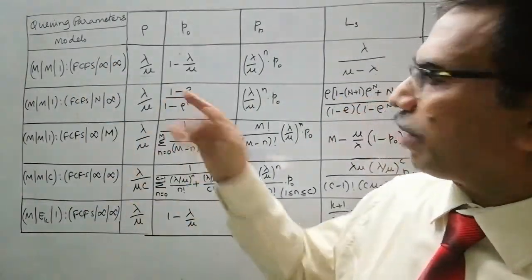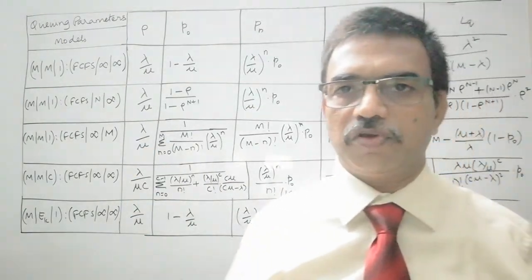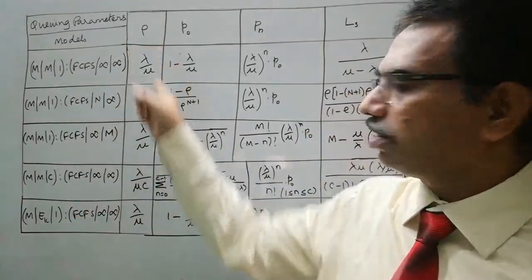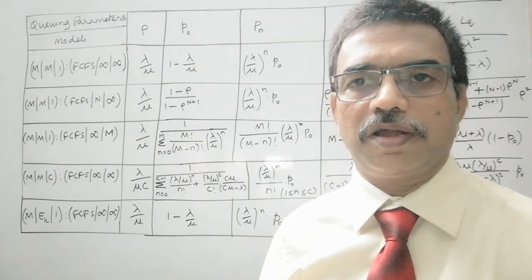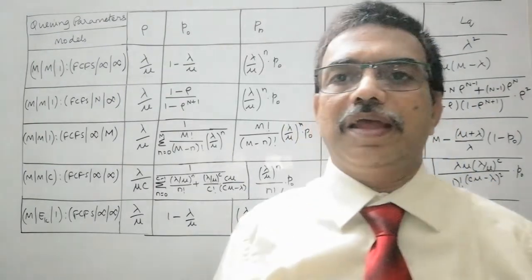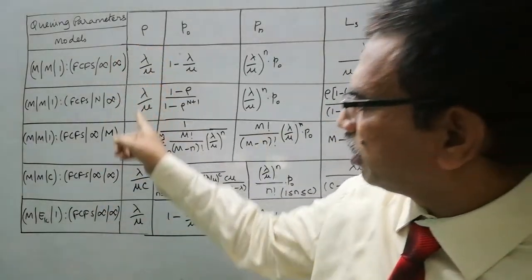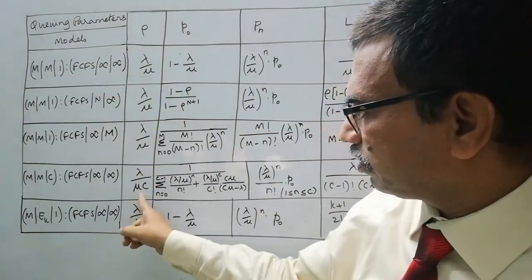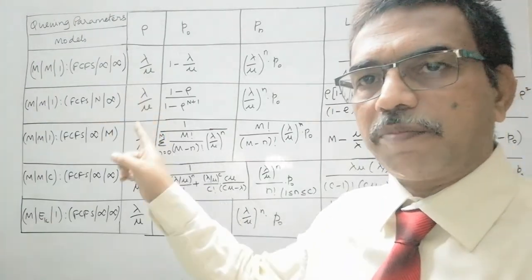Now coming to the queuing parameters, for each model we have some parameters to evaluate the performance of the queuing system. And these parameters are, first one is ρ, that is traffic intensity or in other words called utilization factor. This represents the extent of busy time for the servers.